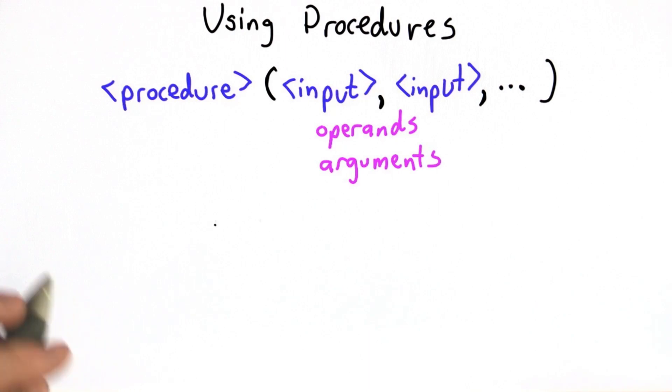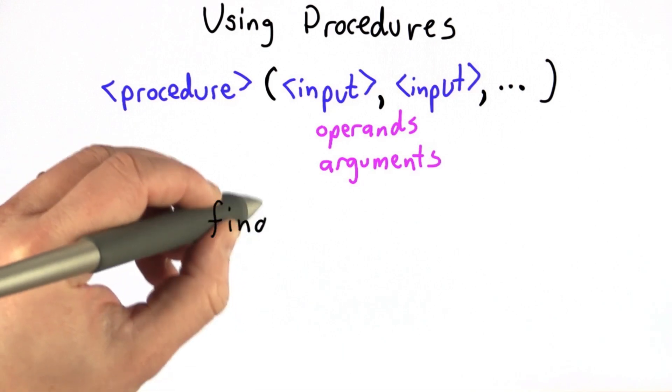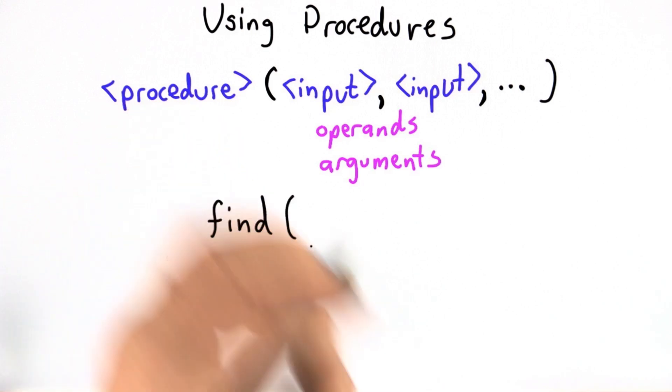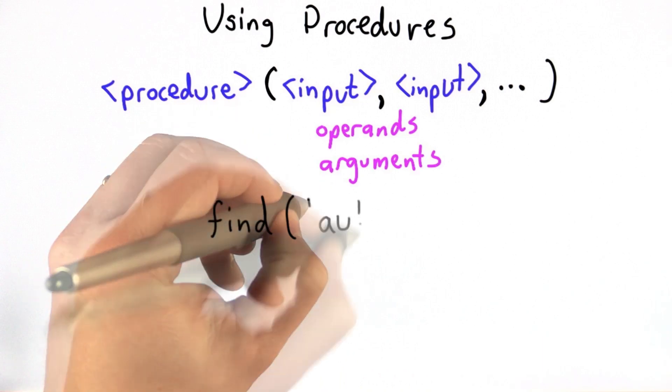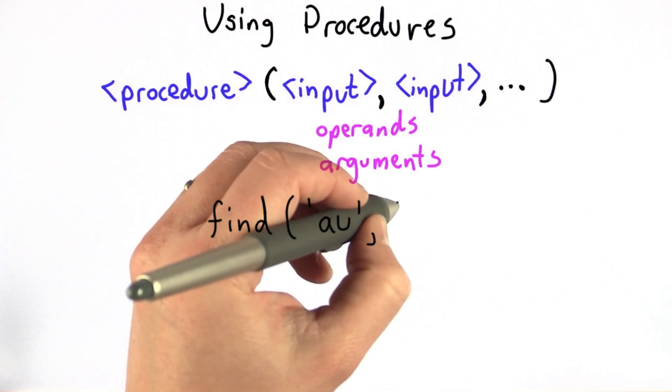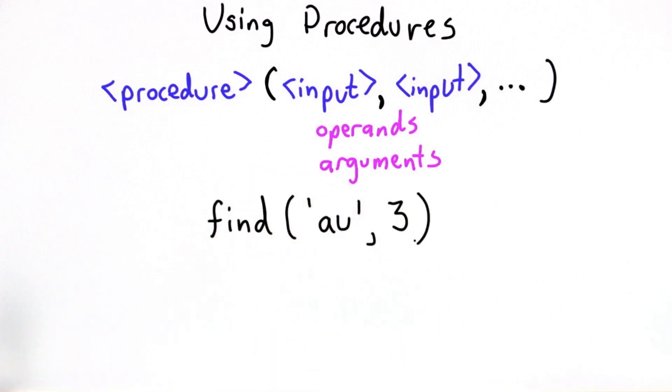So you've actually already done something quite similar to this. Back in unit one, you learned about using find on strings. With find, you would pass in one or two inputs. The first input was a string, the string that you're looking for. And the second input could be a number, the position where you start looking for that string. We used find in many ways in unit one, as well as you used it yourself in the homework for unit one.